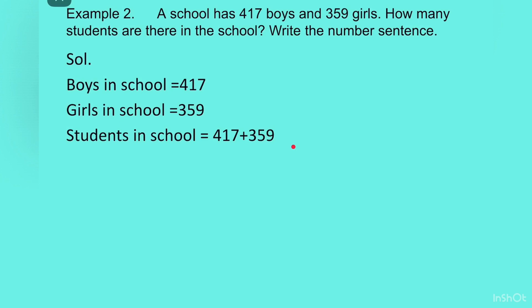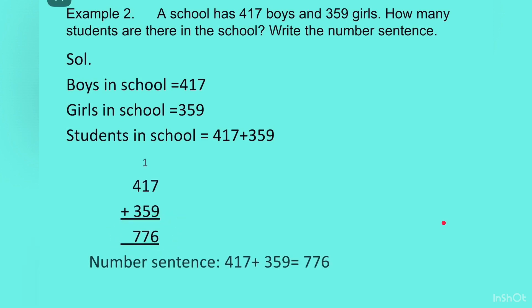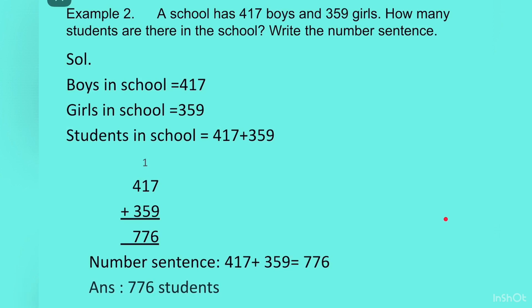We will write them one below the other and add them. You will get the answer as 776. In the question it is given: write the number sentence. So you will write the number sentence like this: 417 plus 359 is equal to 776. And then you can write the answer: 776 students.